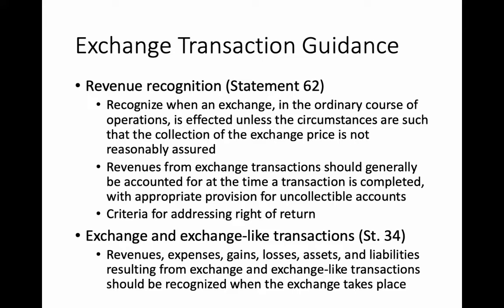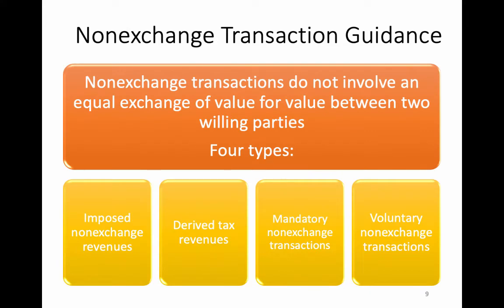On the non-exchange side, most of this comes from Statement 33 with some amendments in Statement 36. Statement 33 identifies four types of non-exchange transactions: two are revenue only — imposed non-exchange revenues and derived tax revenues — and the other two have both a revenue and an expense or expenditure side because they're essentially grants: government-mandated non-exchange transactions and voluntary non-exchange transactions.